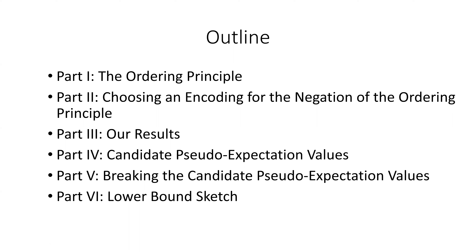In particular, there are natural candidate pseudo expectation values. Using Chebyshev polynomials, we can break these candidate pseudo expectation values. And from this, we can obtain our sum of squares upper bound. And finally, I'll give a very brief sketch for how we prove our sum of squares lower bound.